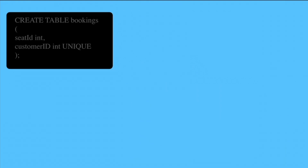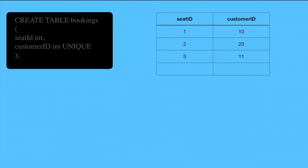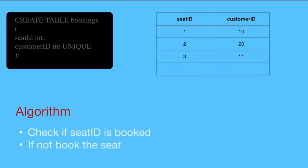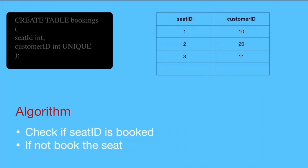Suppose you are in the business of booking seats and you have a basic booking schema with a seat and a customer ID, where the customer ID is unique. The table has a seat ID and a customer ID, and since customer ID is unique, we are not allowing any customer to book more than one seat. The algorithm we use: before creating a booking, we check whether the particular seat is available, and if it is, we go ahead and do the booking.